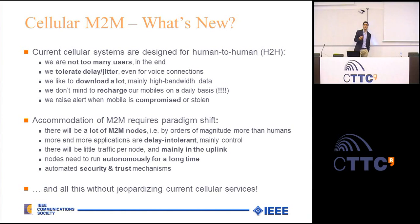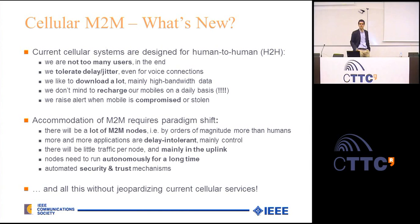In addition, we can raise an alert when something is wrong or when our communicating device has been stolen. However, if we have a machine that is autonomously working, we need to design mechanisms to know that something is going wrong. Therefore we need to rethink how cellular networks run — all of that, bearing in mind that humans and machines have to live together.